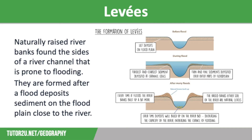Each time the river floods, more sediment is added to the river banks, building them up further. These levees should reduce the likelihood of future flood events; however, they don't, because at the same time as the banks being built up by sediment deposits, the riverbed is being raised by a thick layer of sediment, reducing the channel's capacity.